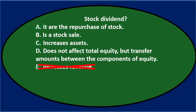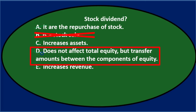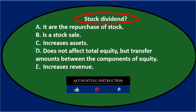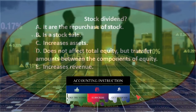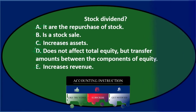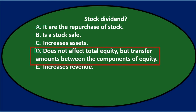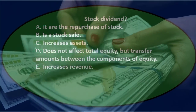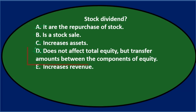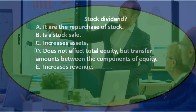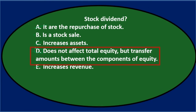Between B and D, D sounds more correct — and it is the correct answer. A stock dividend means we give a dividend in the form of stock. We take it out of retained earnings, just as with any dividend. The other side goes to common stock — so retained earnings goes down because we issued the dividend, but common stock goes up because more shares are now outstanding. Two components of equity move in opposite directions, so total equity is unchanged, but the components of equity change. Final answer: D.